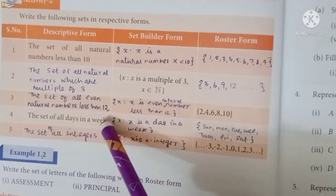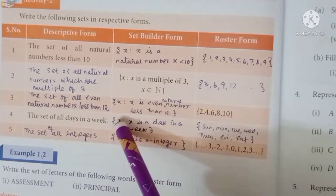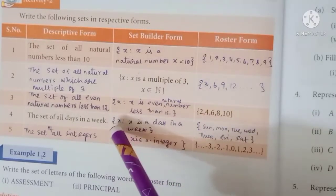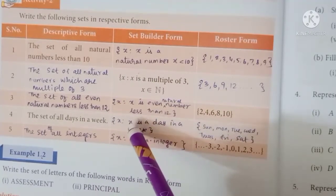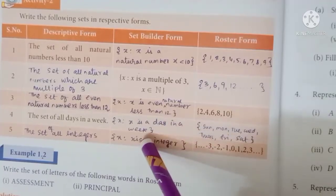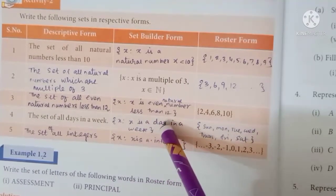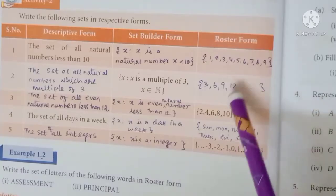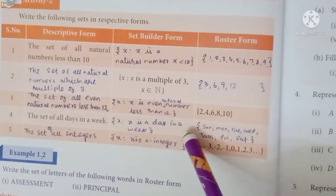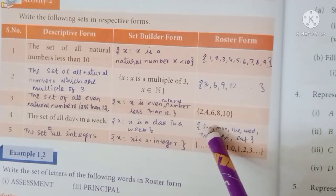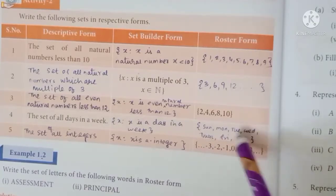The next is the set of all days in a week. Then the set builder form will be: set of all x such that x is a day in a week. The roster form will be the 7 days: Sunday, Monday, Tuesday, Wednesday, Thursday, Friday, Saturday.